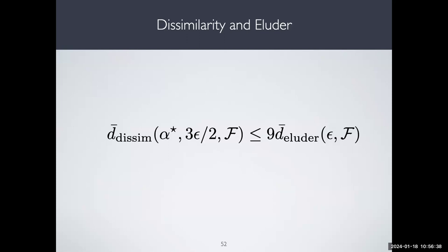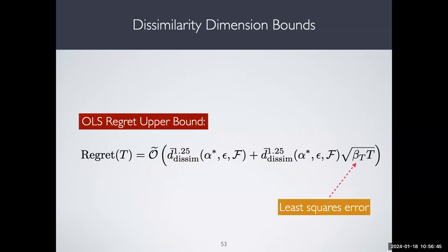We can show that this new dimension, more aligned with optimism, is always a lower bound on the eluder dimension. We can also get an upper bound for the optimistic least squares algorithm, with a T^1.25 dependence on the dissimilarity dimension — both for the noiseless and noisy cases. In some cases, like the wedge class and wiggle wedge class, these bounds are much better than upper bounds based on eluder dimension.